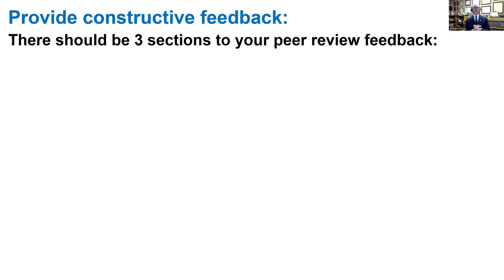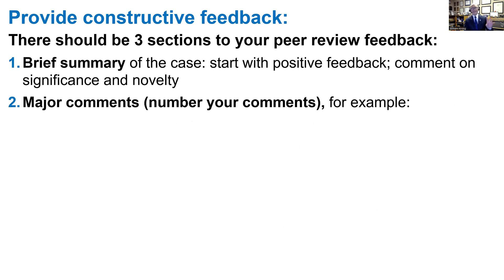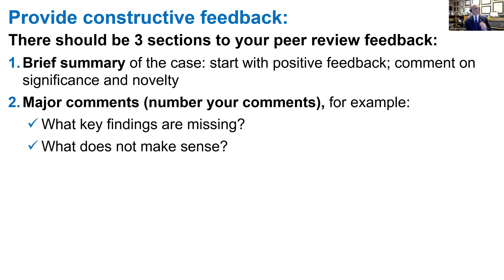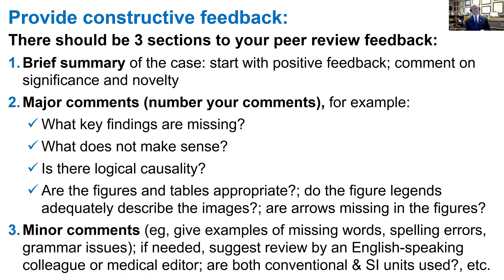There should be three sections to your peer review feedback. First, a brief summary of the case — start with positive feedback and comment on the significance and novelty of their case. Then the next section is major comments, which should be numbered: what are the key findings that are missing, what does not make sense, is there logical causality, are the figures and tables appropriate, do the figure legends adequately describe the images, are arrows missing in the figures? Minor comments should give examples of missing words, spelling errors, and grammar issues. If needed, suggest review by an English-speaking colleague or a medical editor. Both conventional and SI units should be used.